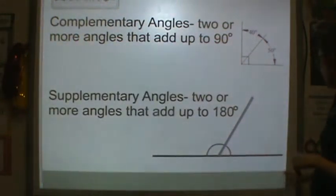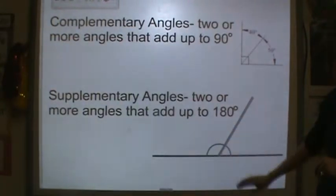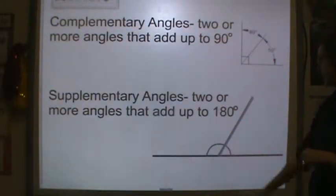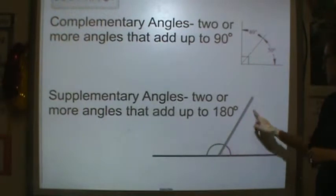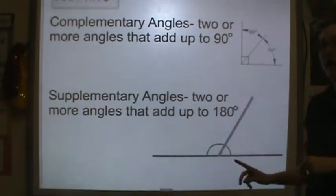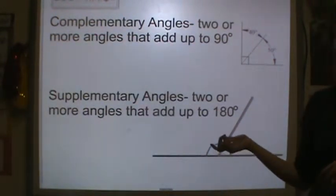A supplementary angle is two or more angles that add up to 180 degrees. So this blue angle and this pink angle add up together and you get a total of 180 degrees.